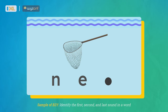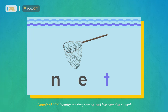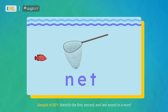Now let's listen to the ending sound. Net. N-n. Eh. T-t. The word net ends with the tt sound. The letter T makes the tt sound. So the word net ends with a T. Net.